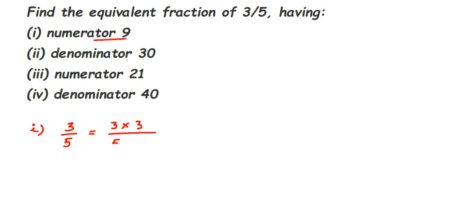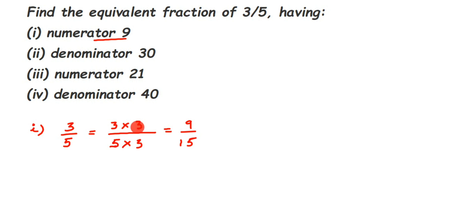We multiply the same 3 in the denominator as well: 5 × 3 = 15. So we get the equivalent fraction 9/15. We wanted 9 in the numerator, so we multiplied both numerator and denominator by 3 to get 9/15. That's the first answer. Now for the second one, we take 3/5 again.